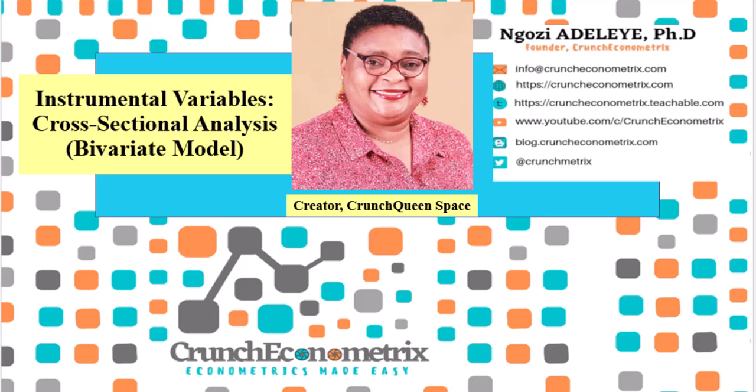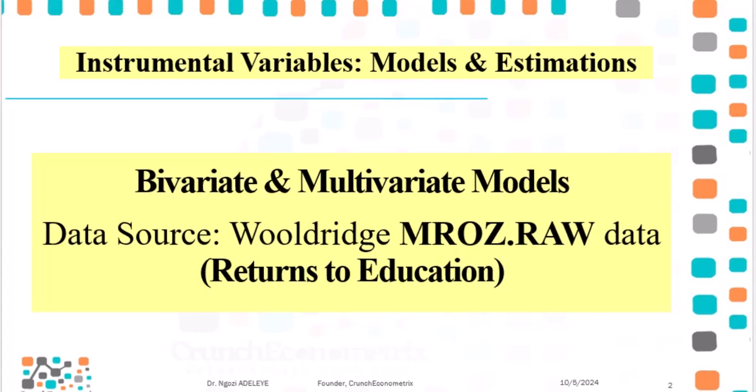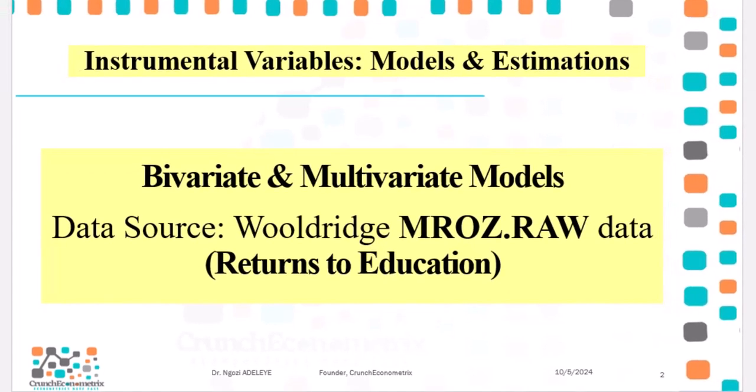Firstly, I'm going to start with a bivariate model, then I will expand to a multivariate model. For these estimations, we will be using the Woodridge MROZ data. The link to that data is in the video description and it will take you to my ResearchGate profile, where you can download the data.